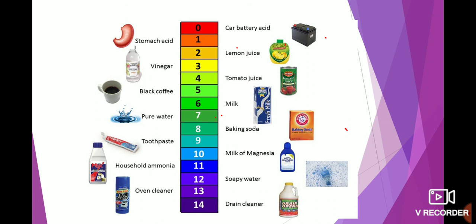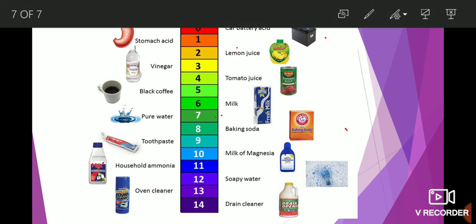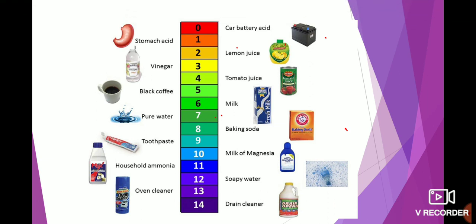In this module on acid, base, and pH scale, remember the pH scale. From this pH scale, we can determine whether a compound is acidic in nature, basic in nature, or neutral. A neutral compound always has a pH of 7. Thank you.